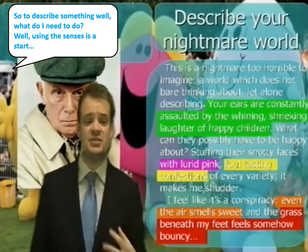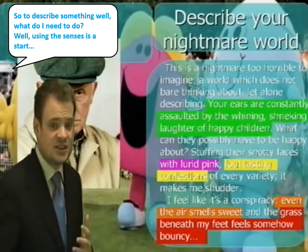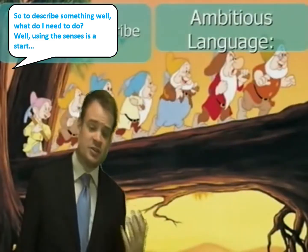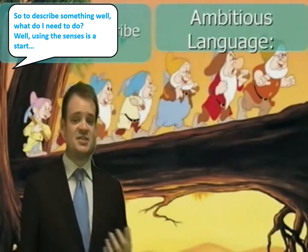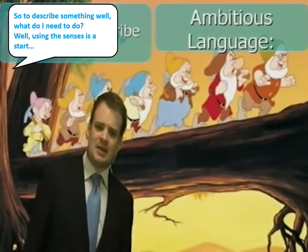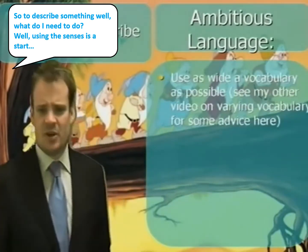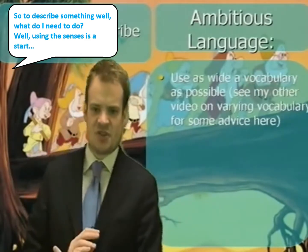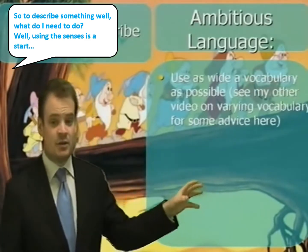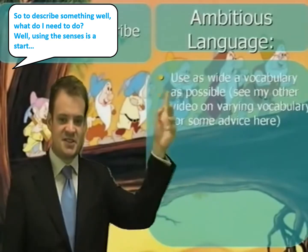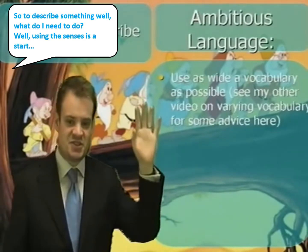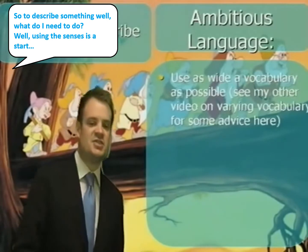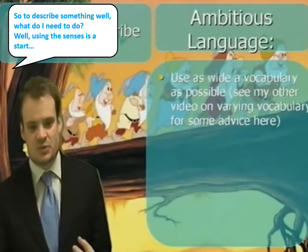We're nearly there because the last two top tips are straightforward. Top tip number three is you've got to use ambitious language. First and foremost, use as wide a vocabulary as possible. I've done another video on vocabulary choices featuring the seven dwarfs, so I suggest you have a look at that. You need to use as many ambitious words as possible, then think about figurative language — similes, metaphors, personification — because it will make your description come alive.